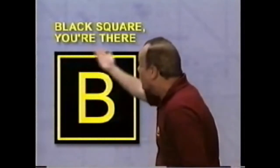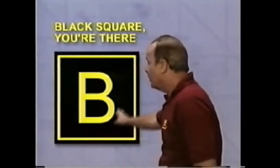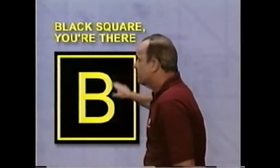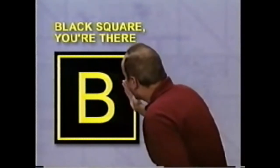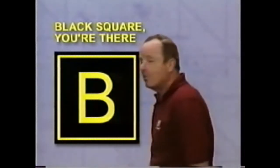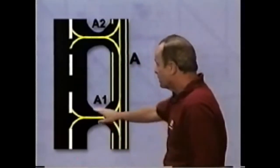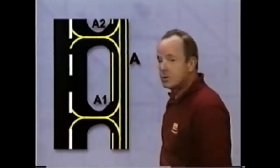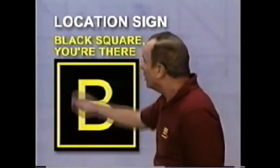There is one saying that helps sort out the meaning of airport signs more than anything else, and that saying is: Black Square, you're there. What that means is if you see a sign with a black square with yellow letters and borders, it tells you what taxiway you are on. So Black Square, you're there means you are on Taxiway Bravo. The convention is that taxiways are labeled with one or more letters, and when it's a stub taxiway, it can also have a number, such as Alpha 1 and Alpha 2. So Black Square, you're there signs are called location signs.